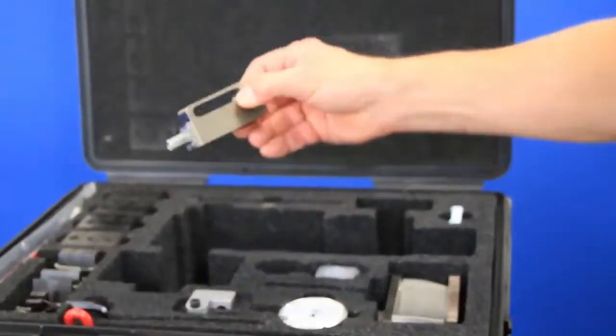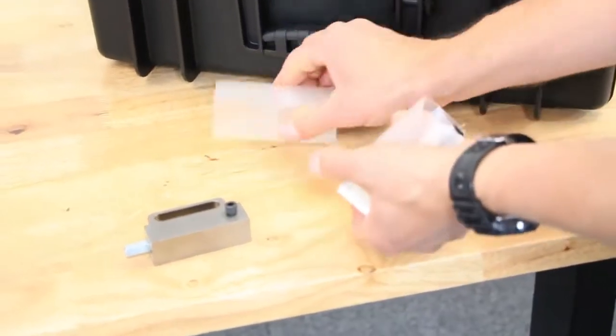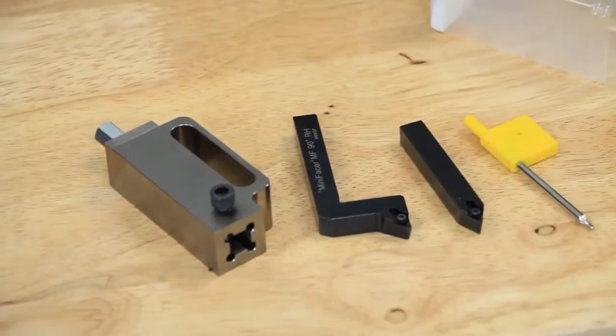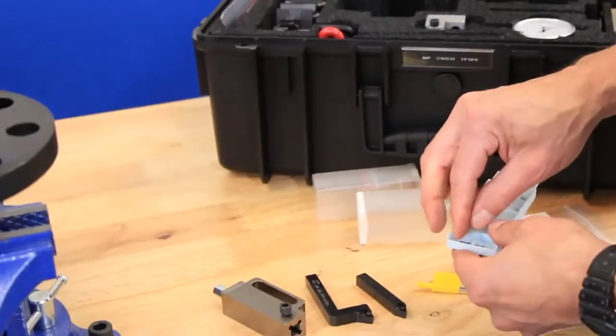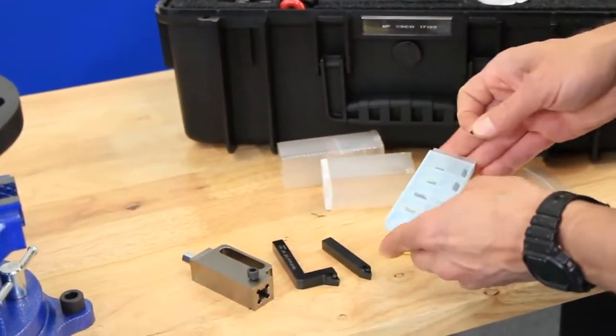Now that the body is clamped to the flange, locate your tool post assembly inserts and insert holders. For extremely small flanges, you can use the 90 degree insert holder to reach the smaller size, but for this example, the straight insert holder will suffice.